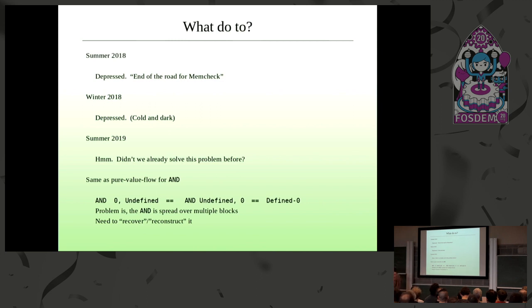And then this summer, I was sitting in my garden, and I was thinking, that's funny. I'm sure I already solved this problem once. Yeah. This is actually the same deal as for AND, where AND is a zero and undefined produces a defined result. The problem is that the AND has been separated out over multiple basic blocks. So that pure value flow instrumentation doesn't kick in and won't remove the error. So it's like, all right, what we need to do is recover or reconstruct the AND. And thought, well, how the hell am I going to do that?